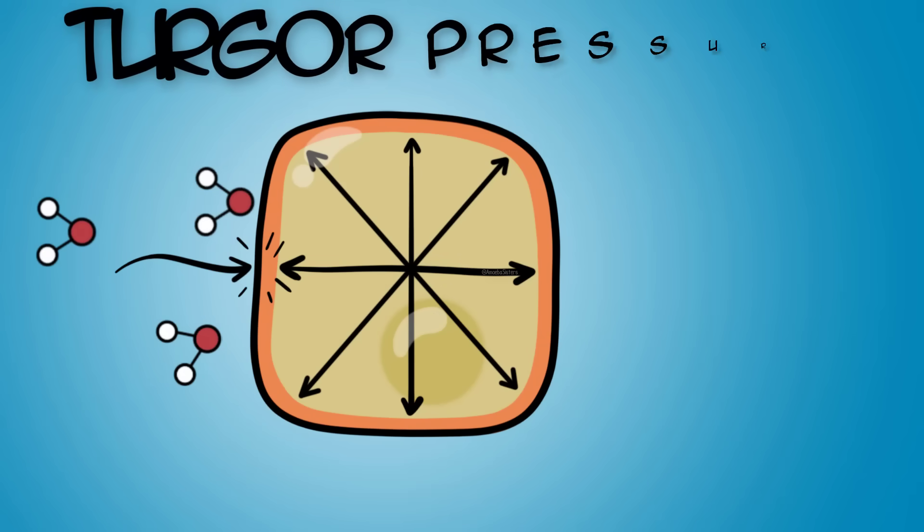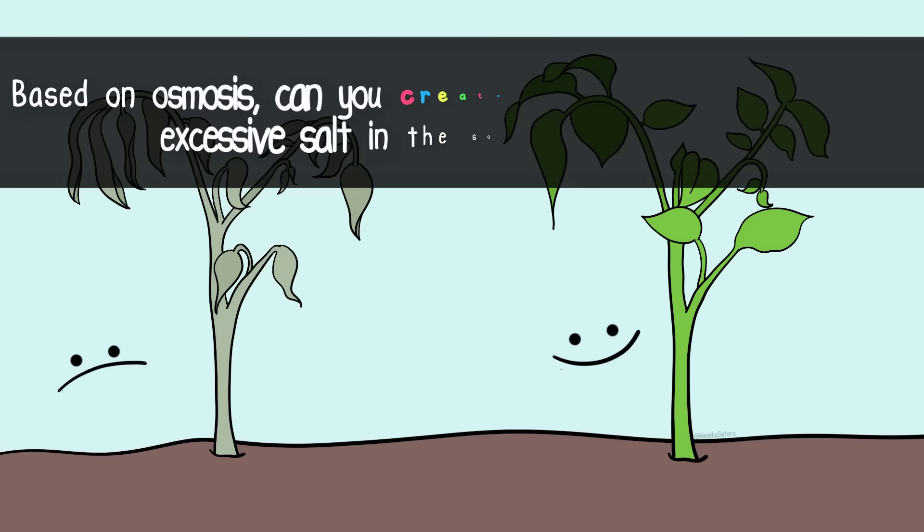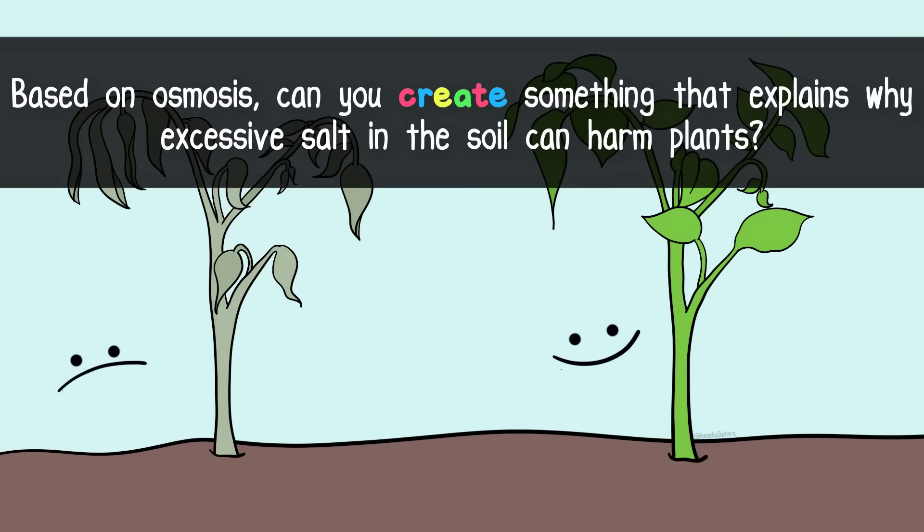We want to point out that this turgor pressure that results in plant cells, thanks to osmosis and plant cell walls, is critical for overall plant structure and the ability of plants to grow upright and not wilt. Turgor pressure is definitely something to explore.